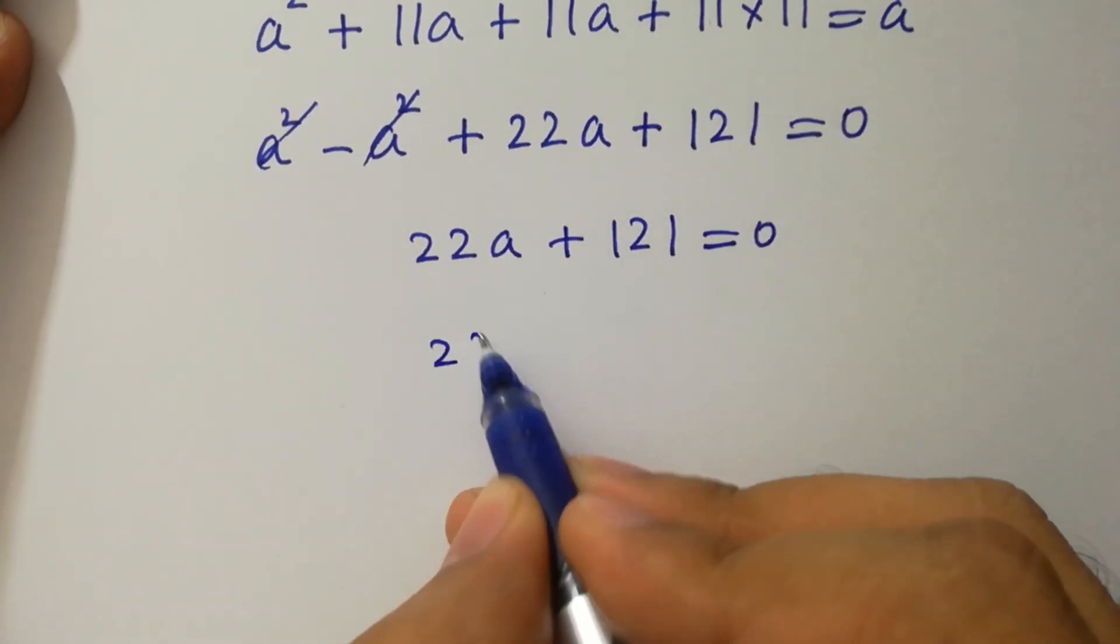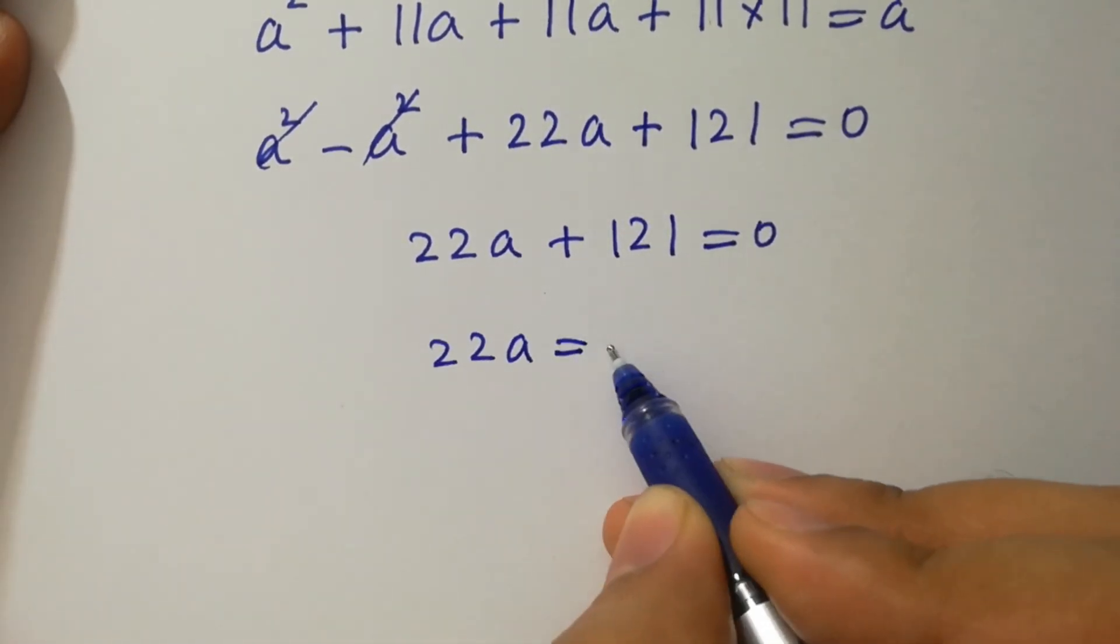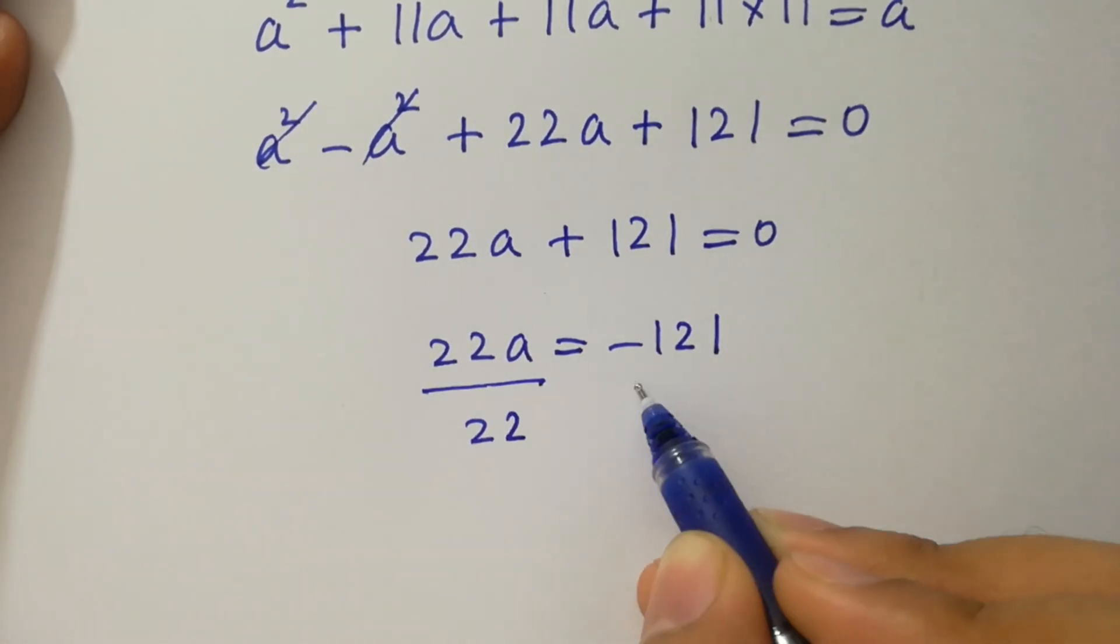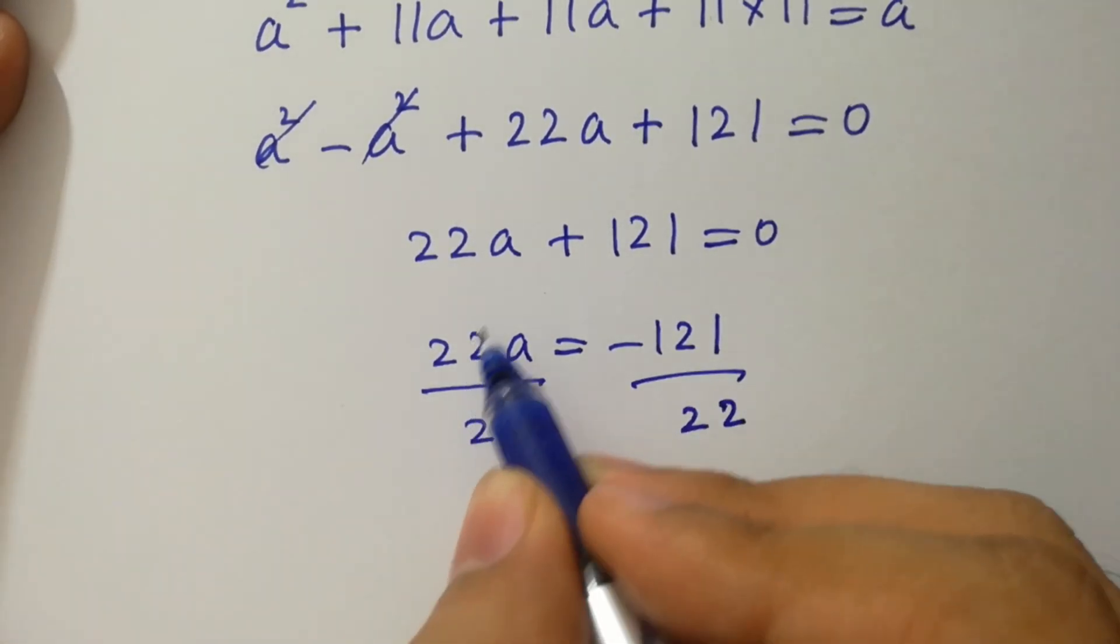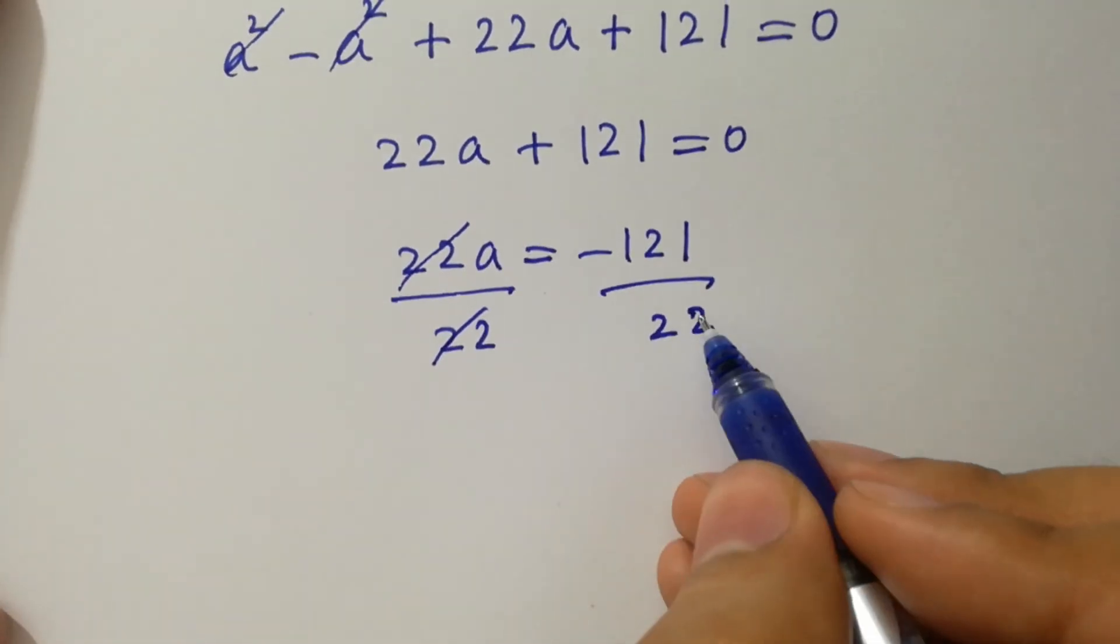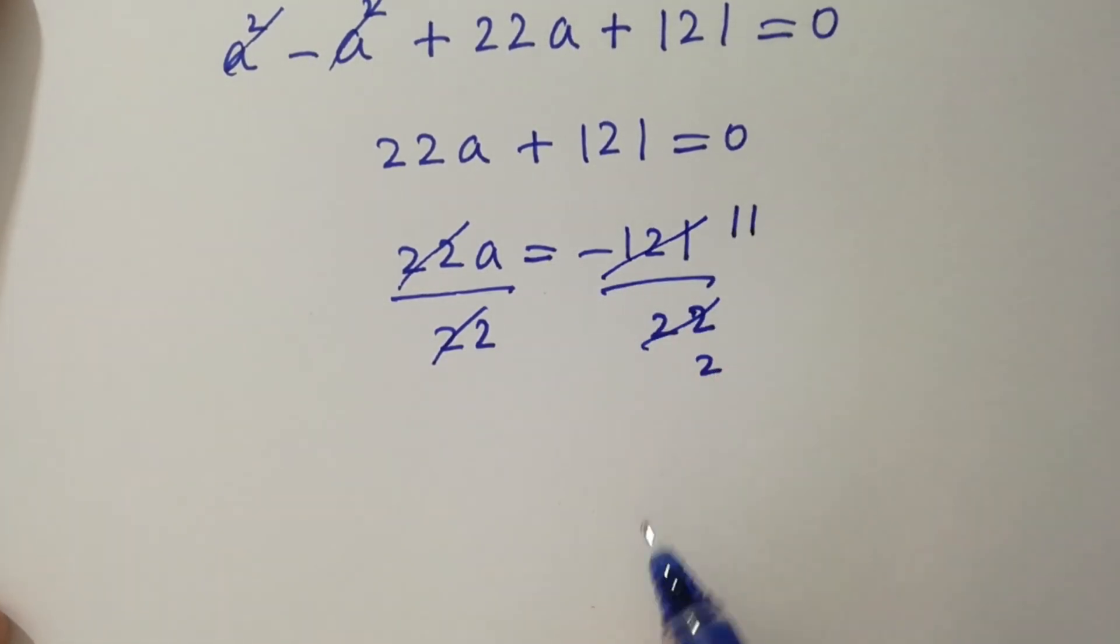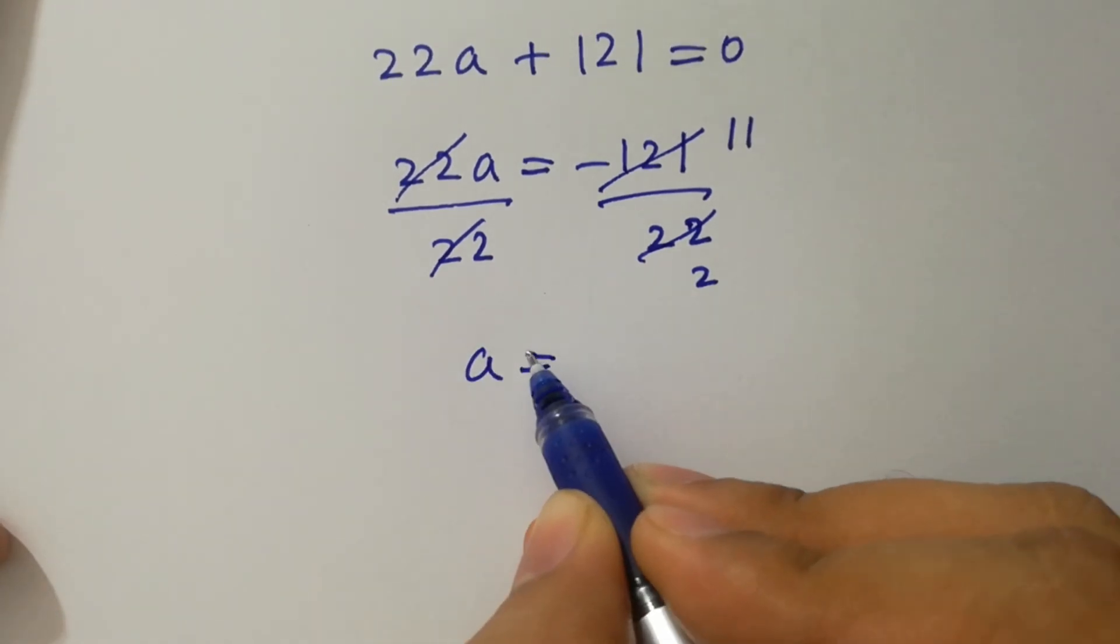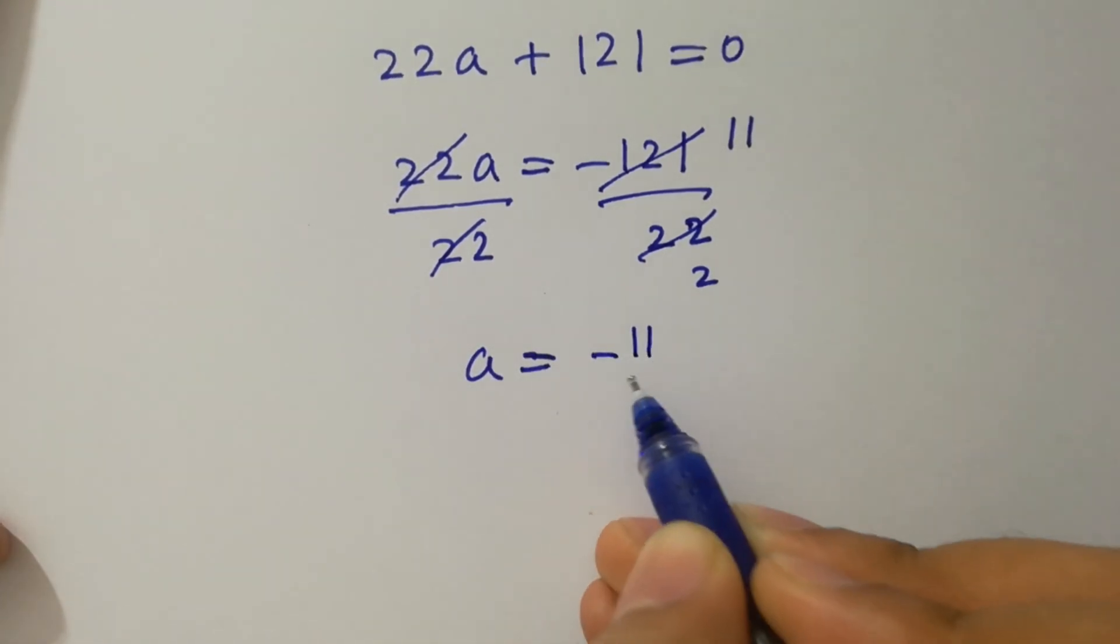22a equal to minus 121. To find a, divide by 22 on both sides. 22 cancels, 11 times 2 is 22, 11 times 11 is 121, equal to minus 11 over 2.